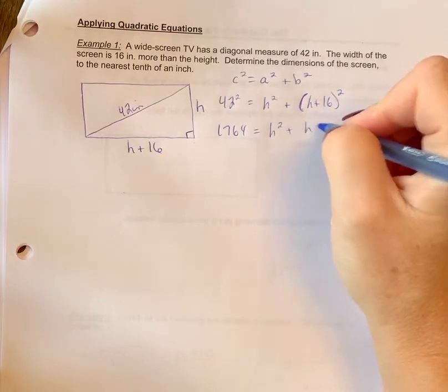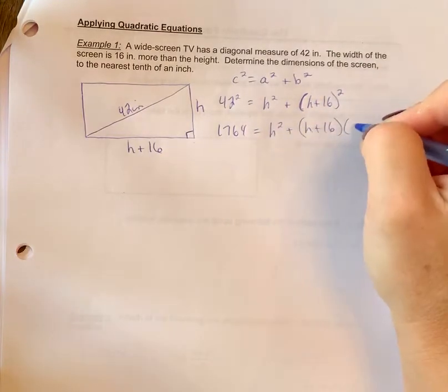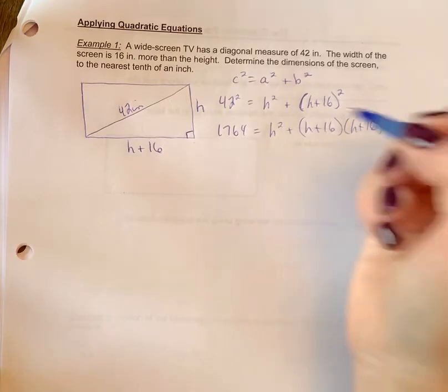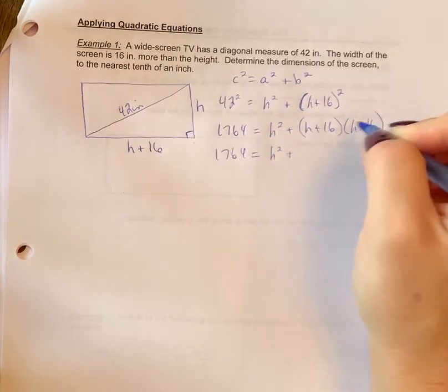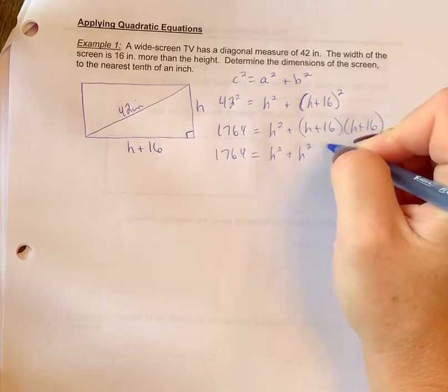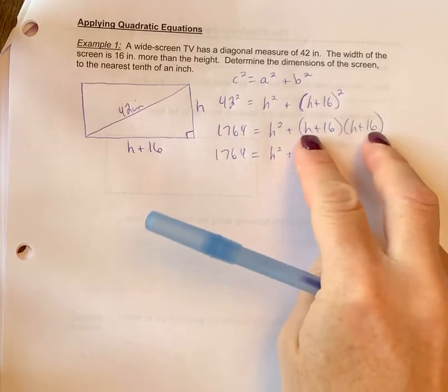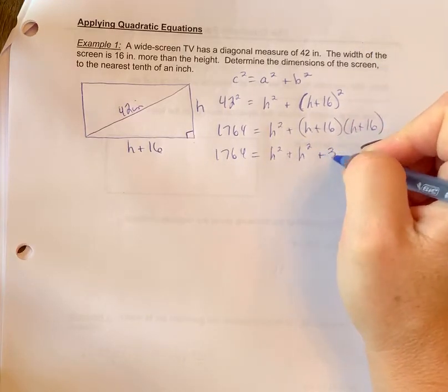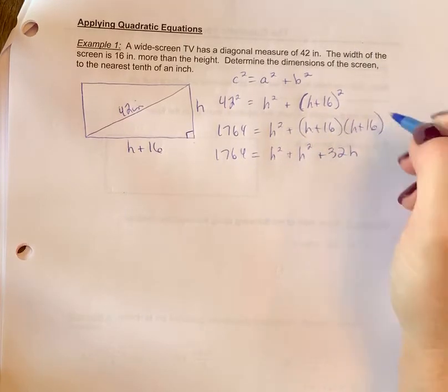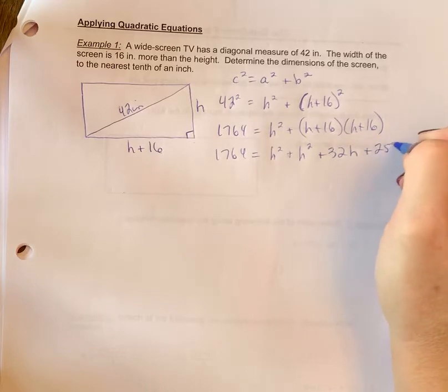You need to expand this. What that means is you're going to write it out twice so that we can use that FOIL method to multiply it. So h times h is h squared. Outside is 16h, inside is 16h, so we're going to get 32h. 16 times 16, 256.